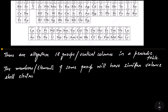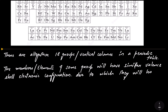The valence shell is the outermost shell. Because members of the same group have similar valence shell electronic configuration, there will be the same number of electrons in their outer valence shell, and due to this they will have similar chemical properties.